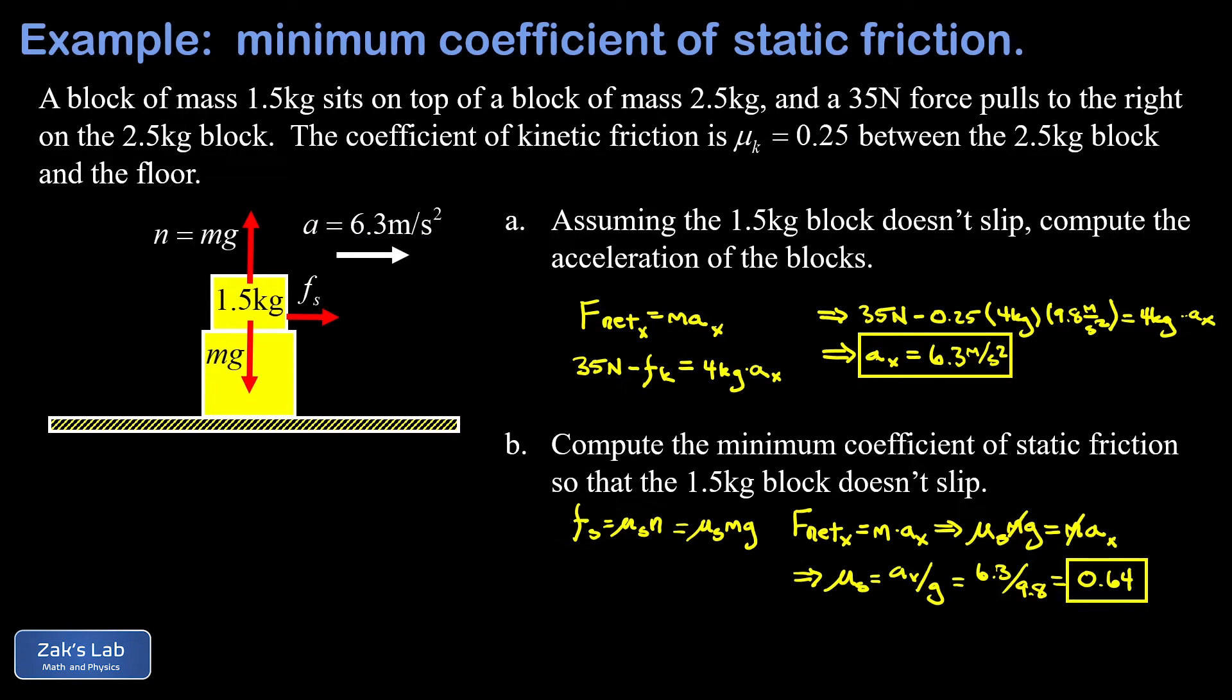Now again that's the minimum coefficient of static friction that's going to keep this block locked in place. The reason we know this is the minimum coefficient is that it corresponds to the static friction force being maxed out. We're right there on the cut line where any smaller static friction coefficient would result in this thing slipping.